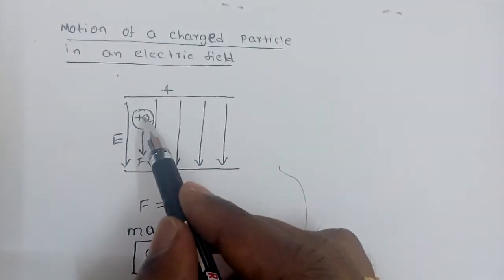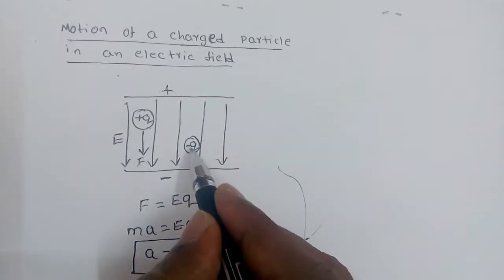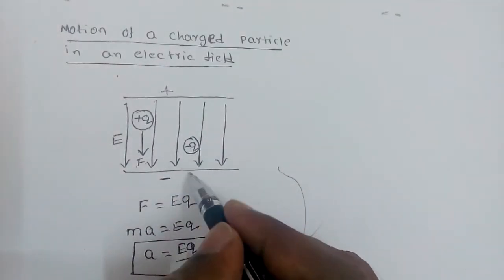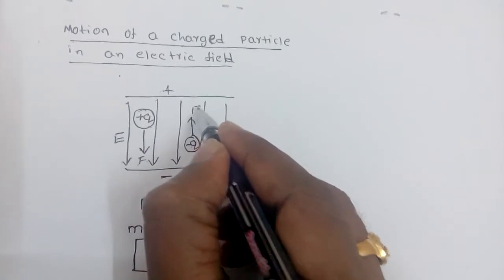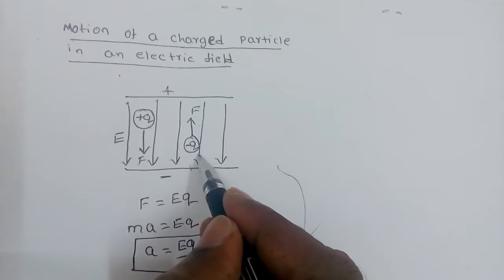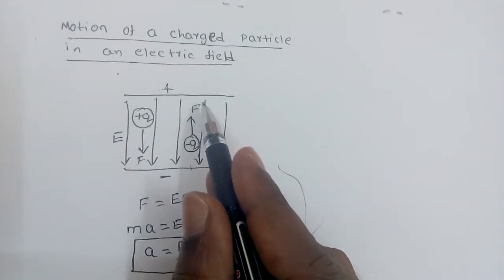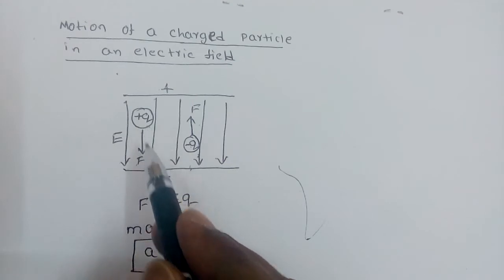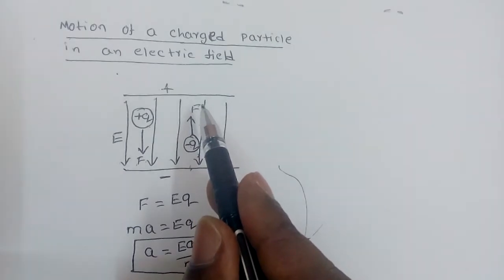Now, if in place of the positively charged particle we place a negative charge, then the positive plate applies an attraction force and the negative plate applies a repulsion force. So this negatively charged particle inside the electric field experiences a force opposite to the electric field, and hence it gets the tendency to move towards the positive plate. In summary: a positive charge moves in the direction of the electric field, and a negative charge moves opposite to the electric field.